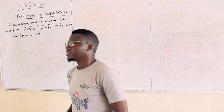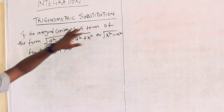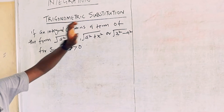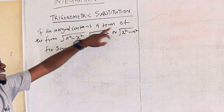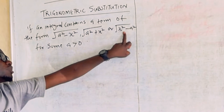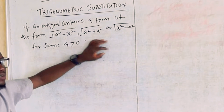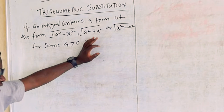So we are continuing with integration by trigonometric substitution. This is one of the techniques that we use in integration. For trigonometric substitution, if an integral contains a term of the form square root of a squared minus x squared, or square root of a squared plus x squared, or square root of x squared minus a squared for some a greater than zero, then we bring in this technique called integration by trigonometric substitution to solve it.